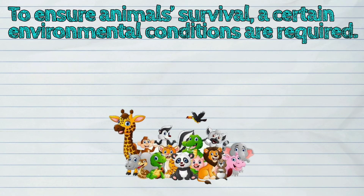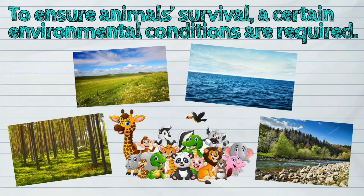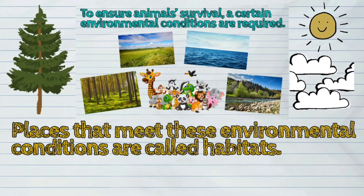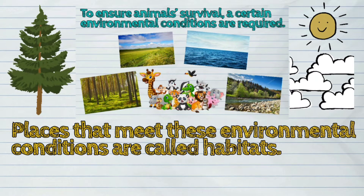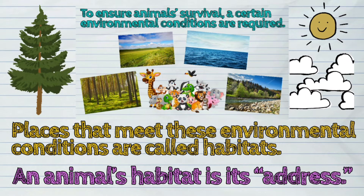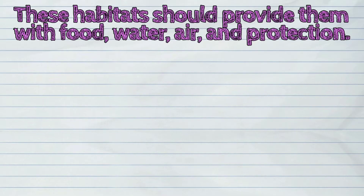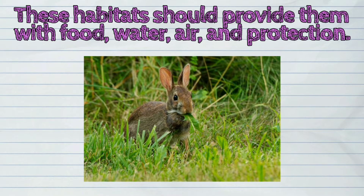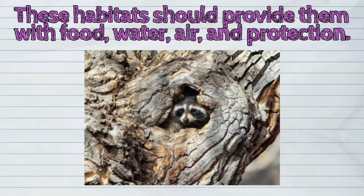To ensure animal survival, certain environmental conditions are required. Places that meet these environmental conditions are called habitats. An animal's habitat is its address. These habitats should provide them with food, water, air, and protection.